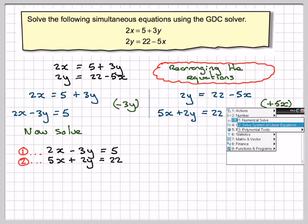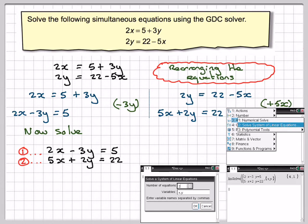So going back to this, these are screenshots of what I've just done. So you get that x equals 4, y equals 1. You should write down from GDC.